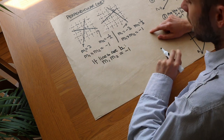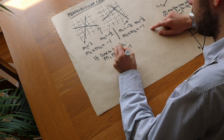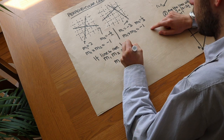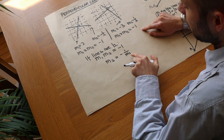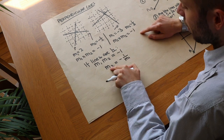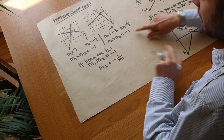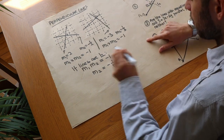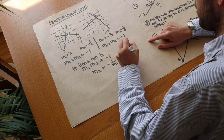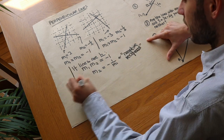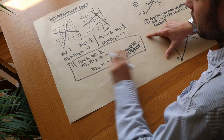That symbol means perpendicular. Now if we divide by M1, we get M2 is equal to minus 1 over M1. That's basically saying: if we've got the gradient of one line, we can get the gradient of the other line by doing the negative reciprocal. 1 over something means reciprocal, so I'll call this the negative reciprocal. Let's put this in a box because it's super important — that's what we're going to use for this video.